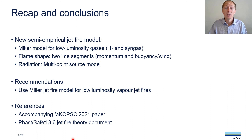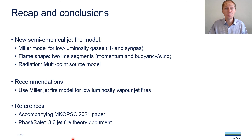To recap the main points: we have presented the new Miller jet fire model applicable to low-luminosity gases, in which the flame shape is represented as two line segments — one momentum segment close to the release point and one buoyancy/wind segment further away. Radiation is calculated using a multipoint source model. Comparison with experimental data shows that the recommendation is to use the new Miller model for low-luminosity gases like hydrogen and syngas. Further details are available in the accompanying paper and the PHAST SAFETI jet fire theory document. The new Miller model will be part of the upcoming PHAST and SAFETI release version 8.6, scheduled for later this year.